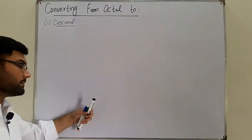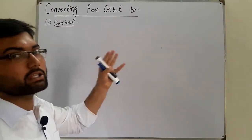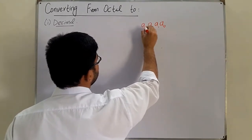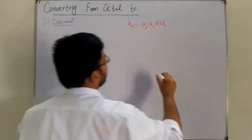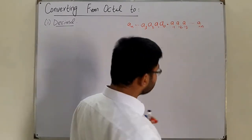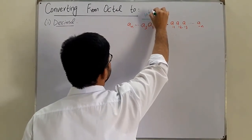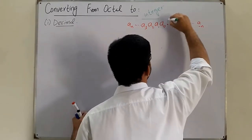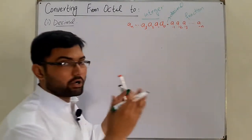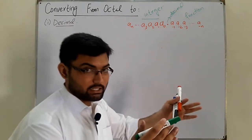Octal is a weighted system and decimal is a weighted system. The basic way to convert from any system to the decimal system is to multiply it by its weight. So let's say we have an octal number a₀, a₁, a₂, a₃... up to aₙ, and then we have a decimal point, and after the decimal point we have a₋₁, a₋₂, a₋₃ up to a₋ₙ. This is the octal number with its integer part and fraction part.